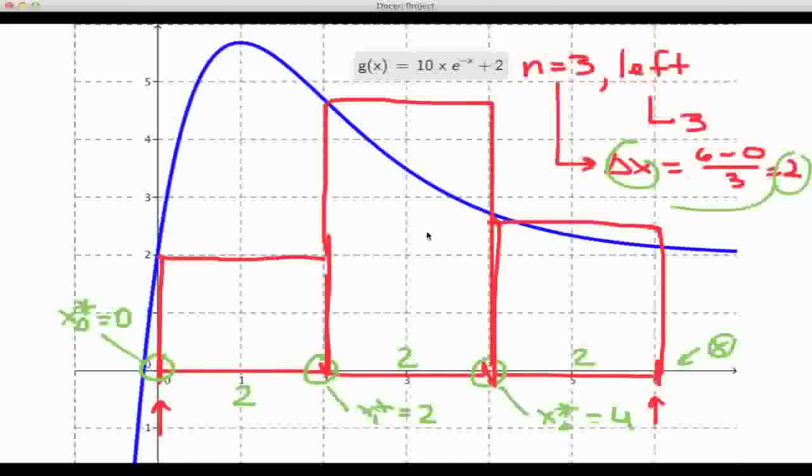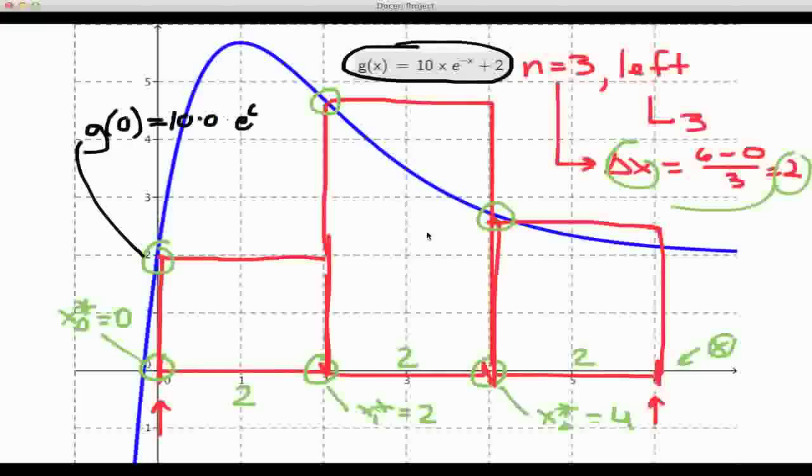The height values are going to be here, here, and here for these three left-handed rectangles. Now what are those height values? Well, I got them by taking the x star values here on the x-axis and just plugging them into g. So let's write this down. The y value here would just be g of 0, and that is equal to, if you use the formula, 10 times 0 times e to the 0 plus 2. And so that, of course, is just equal to 2.